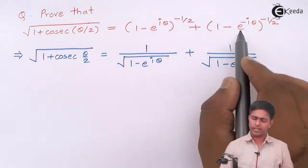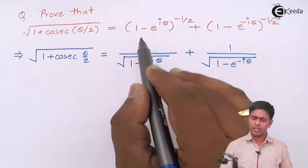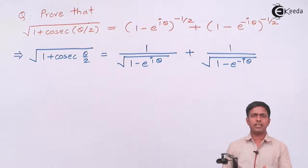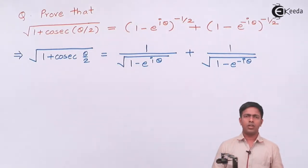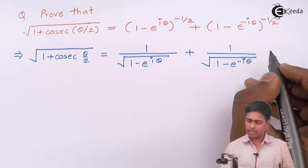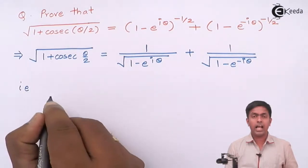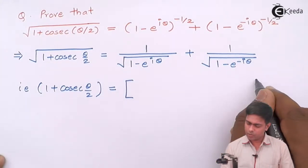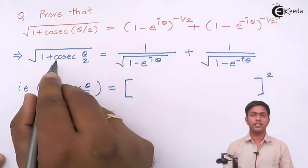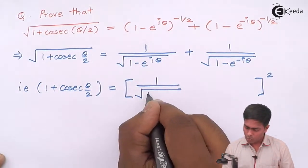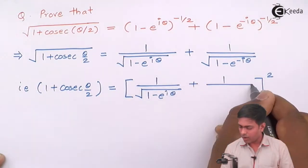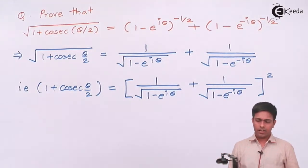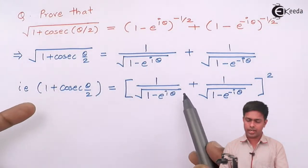If I start from the right-hand side and do cross multiplication, after cross multiplication we get two roots again and have to perform rationalization. So instead, let's square both sides. To prove the original statement, I just need to prove that (1 + cosec θ/2) equals the square of the RHS expression.